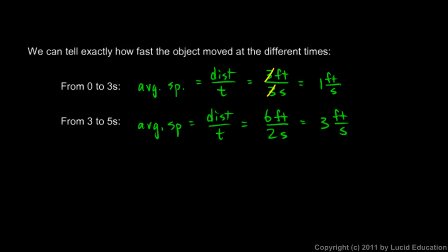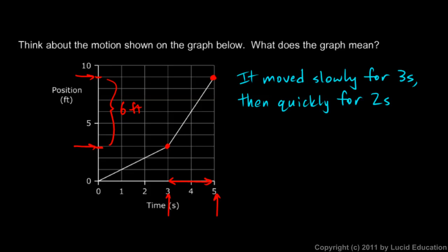When we do calculations like this, we're actually calculating the slope of the line. Mathematically, this one foot per second was the slope of this first segment on the graph, and then our second calculation, three feet per second, is the slope of this segment. The mathematical idea of slope is what we'll look at next.